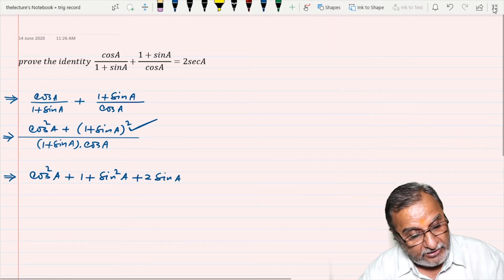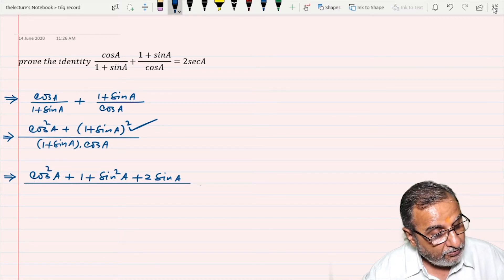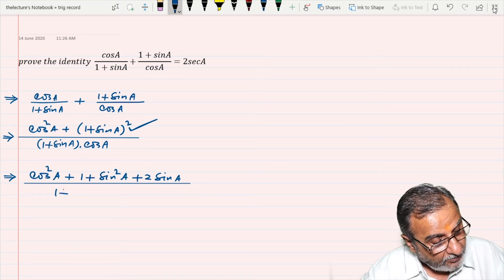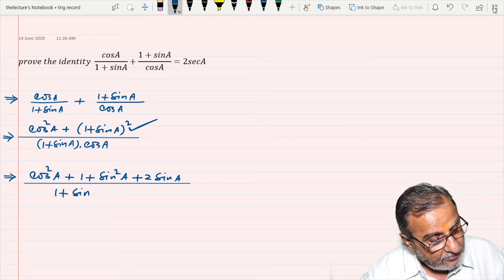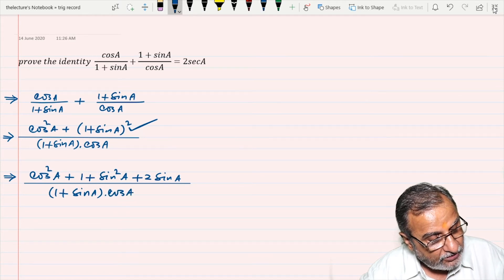A² + B² + 2AB. And now we will have (1 + sin A) · cos A in the denominator.